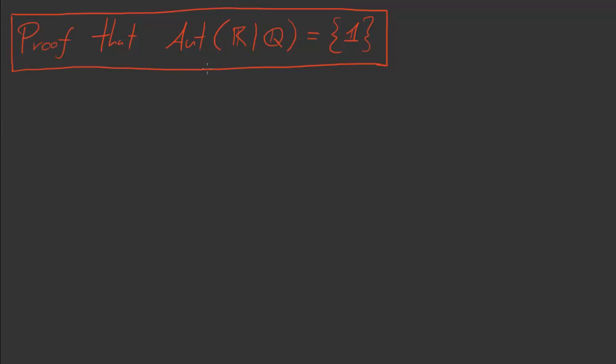Okay, so in an earlier video I promised that I would put up another tape showing why it's true that Aut(R|Q) just consists of the identity morphism. Why Aut(R|Q) is the trivial group. It only has the identity automorphism. So in this video we'll see why that's true.